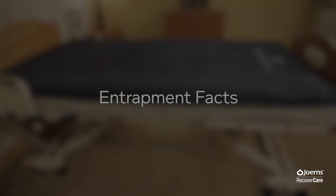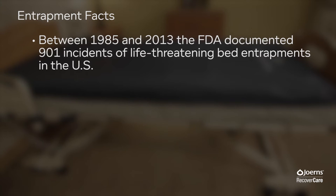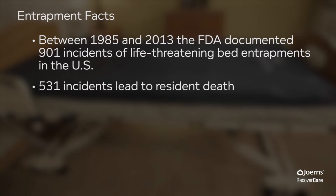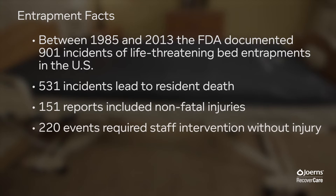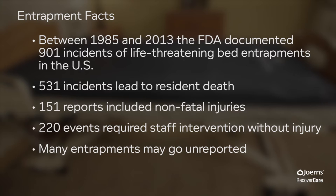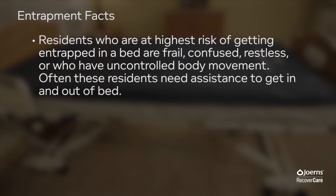Here are some entrapment facts. Between 1985 and 2013, the FDA documented 901 incidents of life-threatening bed entrapments in the U.S. 531 incidents led to resident death. 151 reports include non-fatal injuries. 220 events required staff intervention without injury. And many entrapments may go unreported. Residents who are at highest risk are frail, confused, restless, or who have uncontrolled body movement. Often these residents need assistance to get in and out of bed.